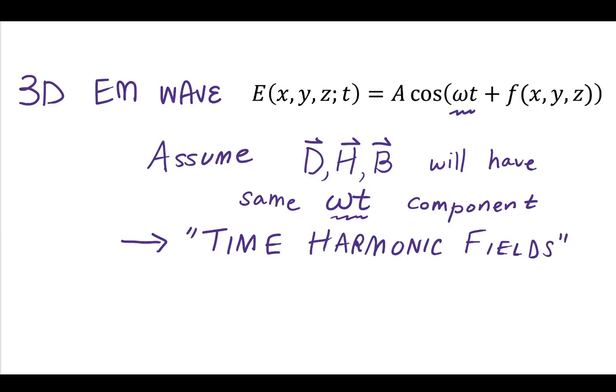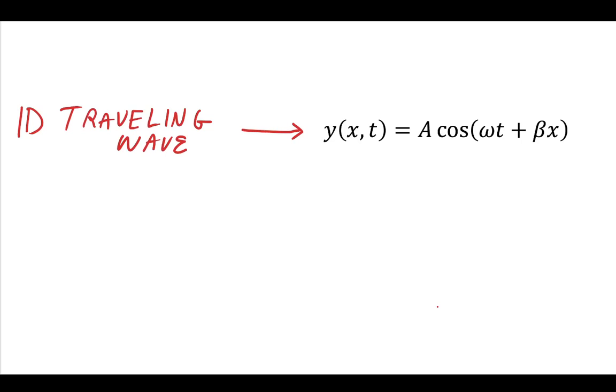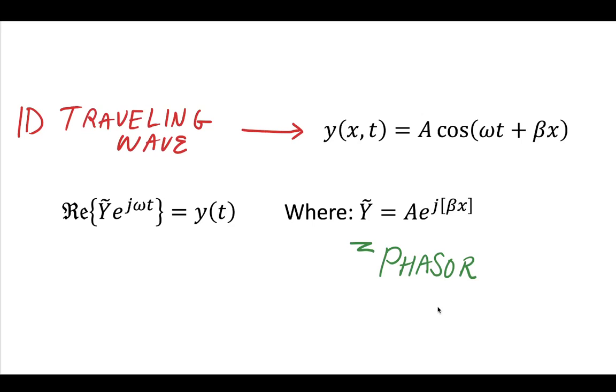Now because those are time harmonic fields, that means that we want to reduce the complexity of our solution by removing that omega t component while we're dealing with our equations and instead write these fields in the phasor form. And this is very similar to what we did when we started with the 1D traveling wave where we said let's reduce that by making them look like phasors. Let's get rid of that omega t component when we're dealing with them.